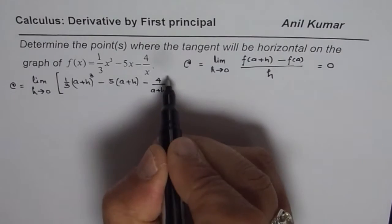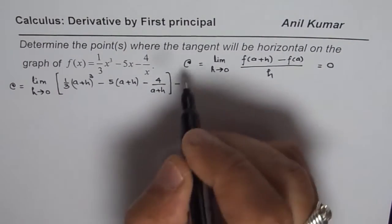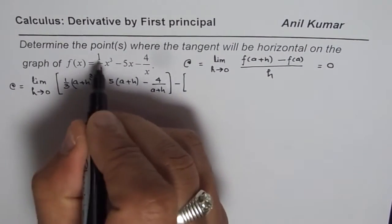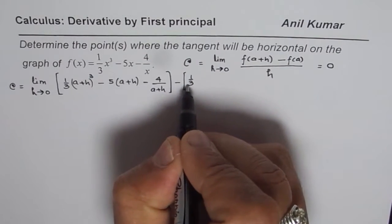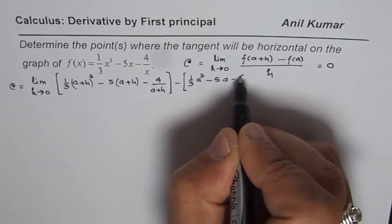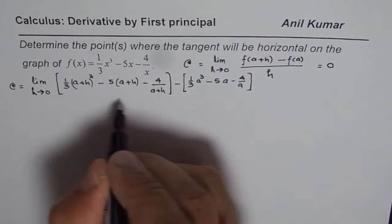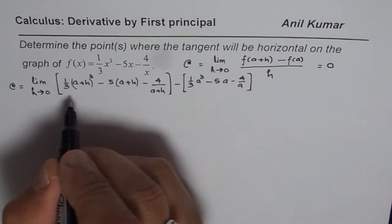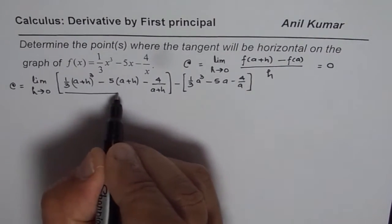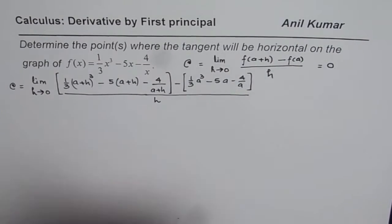Using square brackets for f(a+h), minus f(a) — where f(a) means replace x with a — we have minus [(1/3)a³ - 5a - 4/a]. And all of this is divided by h. So that is the full expression for the limit.